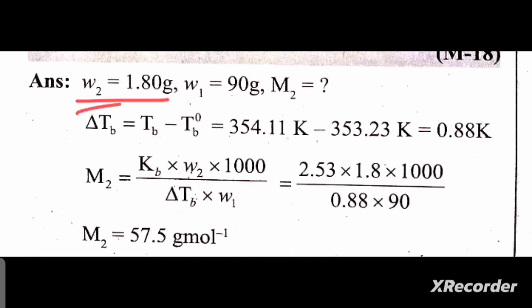Now we need to find out the elevation in boiling point. The boiling point of solution is 354.11 Kelvin, and the boiling point of pure benzene, Tb0, is 353.23 Kelvin. When we subtract to get delta Tb, we get 0.88 Kelvin.